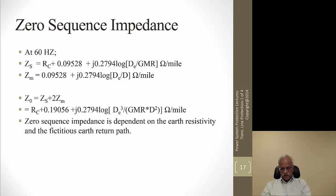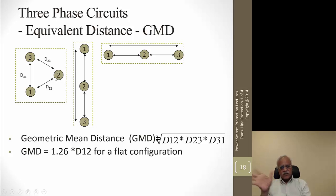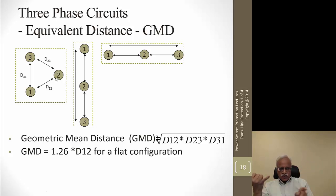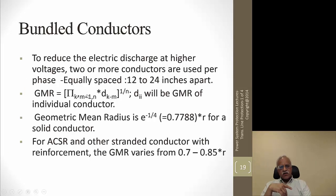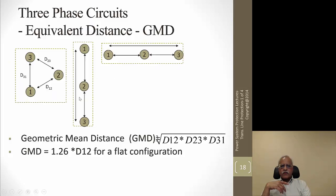These formulas are provided only to verify that the impedance values used for relay settings are reasonable. Phase conductors can be arranged in a delta formation on a steel tower, or in horizontal or vertical configurations. The H-frame structure uses a horizontal configuration, while the tower shown in the GE Alstom reference book uses a vertical configuration.